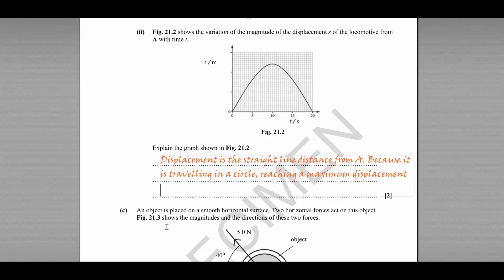It is symmetrical about t equals 10 seconds. At t equals 0 and t equals 20 seconds, the train is at point A.